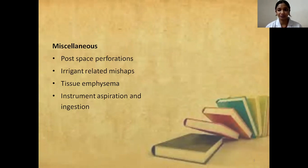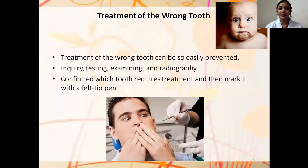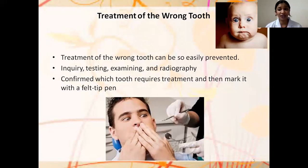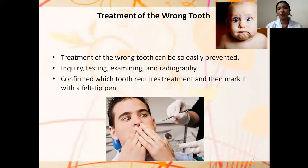Coming to access-related mishaps: treatment of the wrong tooth can be easily prevented by taking proper history and obtaining subjective and objective symptoms from the patient, followed by testing and examining radiographs. Once the tooth is decided on, make sure you treat the right tooth — you can mark it with a felt pen before applying the rubber dam, or apply the rubber dam only when you are sure which tooth you are going to treat.